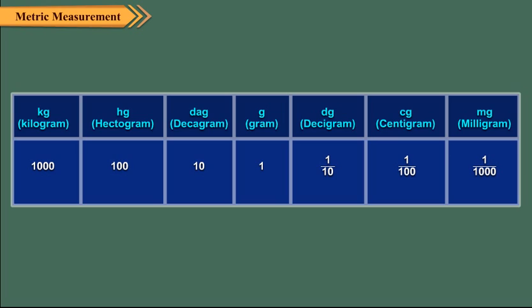The basic unit of mass is gram. The higher units are obtained by adding the prefixes deca, hecto, and kilo.